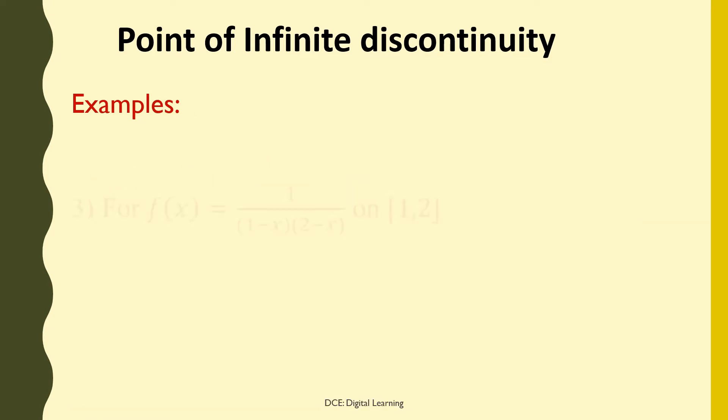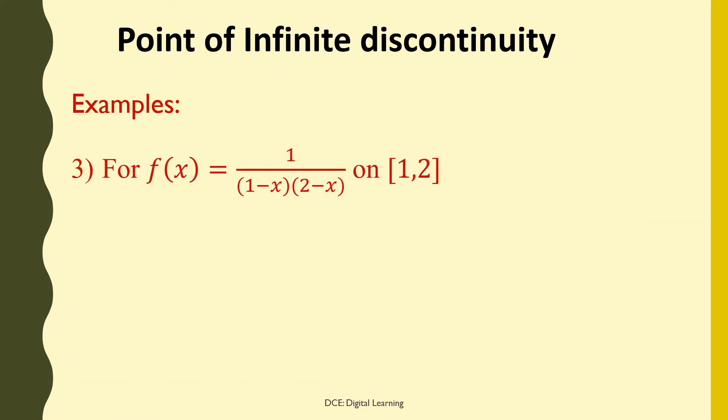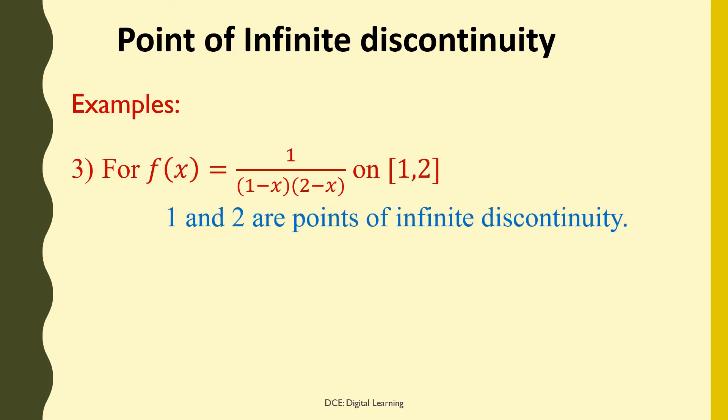Third example: f(x) = 1/((1 − x)(2 − x)) on the closed interval [1, 2]. Clearly, this function is defined everywhere except x = 1 and x = 2. Therefore, 1 and 2 are both points of infinite discontinuity for this function.